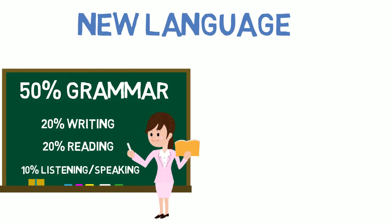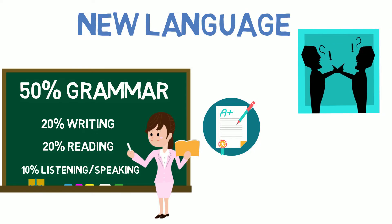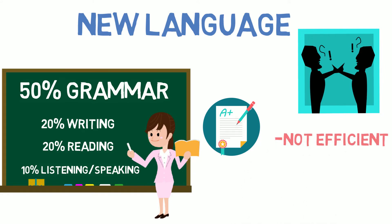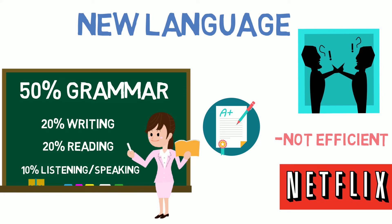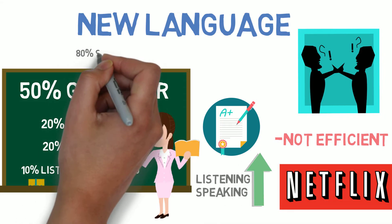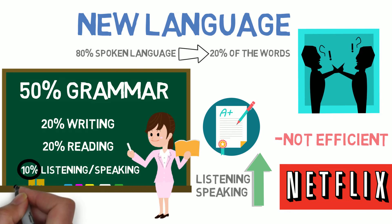Although I retained a lot of knowledge and passed all my tests easily, I noticed that I couldn't speak well nor understand people when they spoke to me in English. The method used by school was not effective or efficient, and it wasn't working for me, so I started watching movies and TV shows in English, and my listening and speaking skills improved dramatically. Given that 80% of spoken language only uses 20% of the existing words, focusing on the right elements will generate huge results.